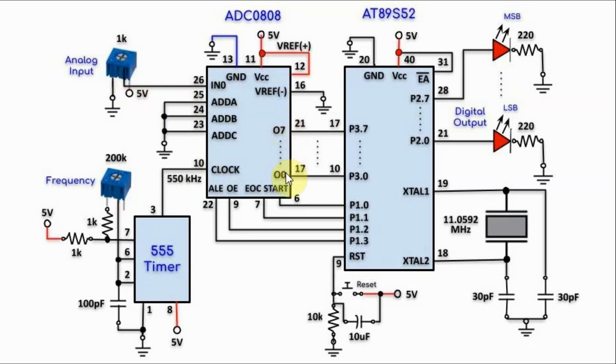The digital output from the least significant bit to the most significant bit is interfaced with port 3 of the controller. The control lines are connected to port 1, and the output digital value is displayed on these 8 LEDs from the most significant bit to the least significant bit through port 2 of the controller.